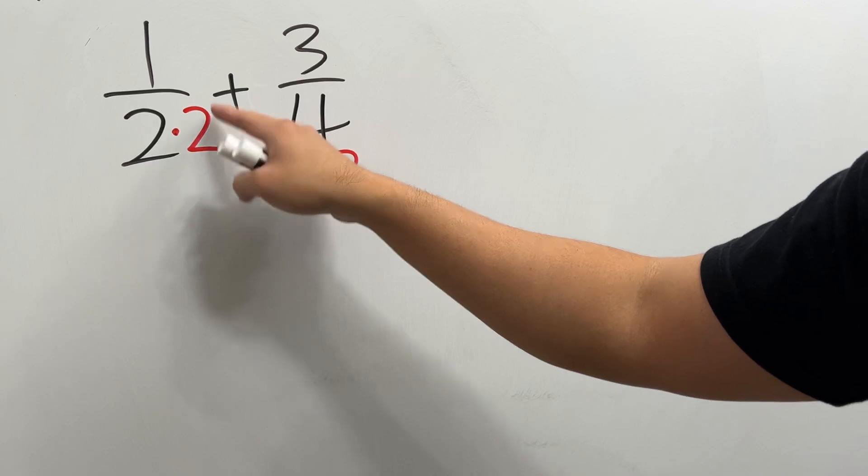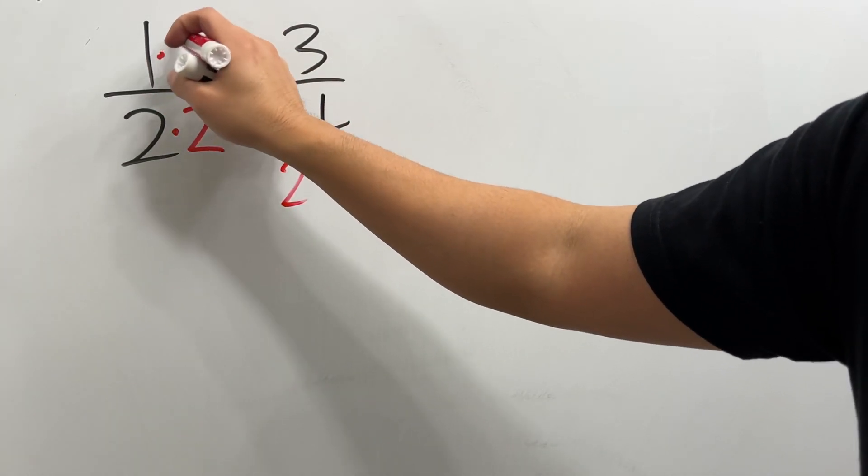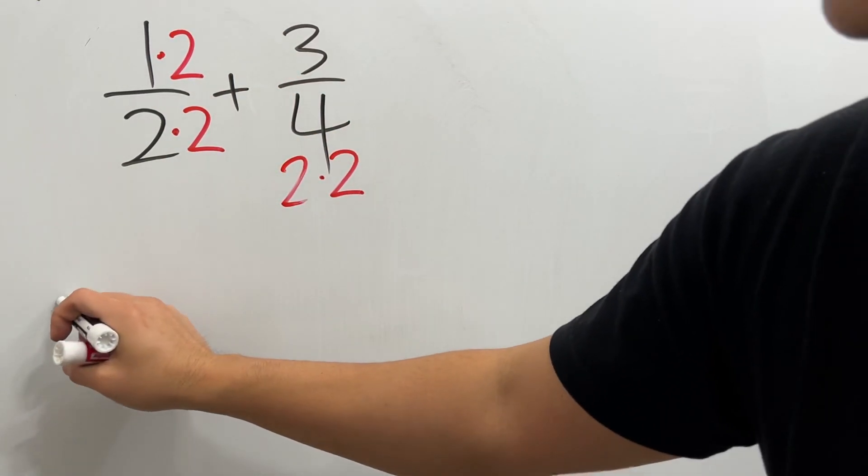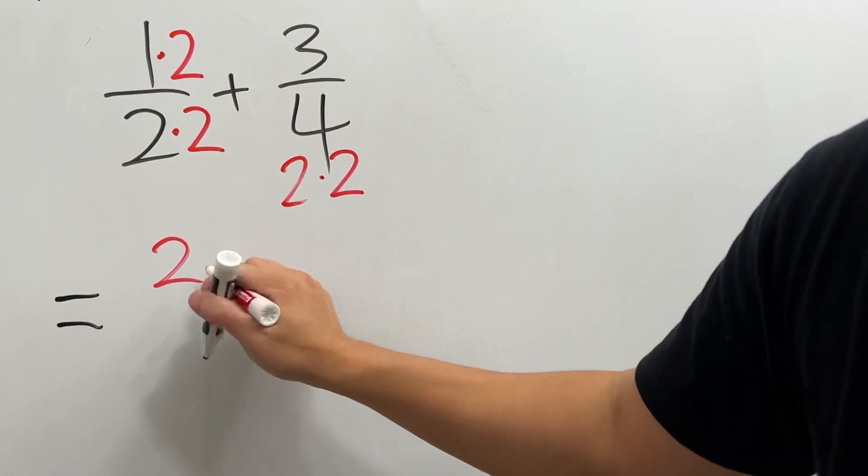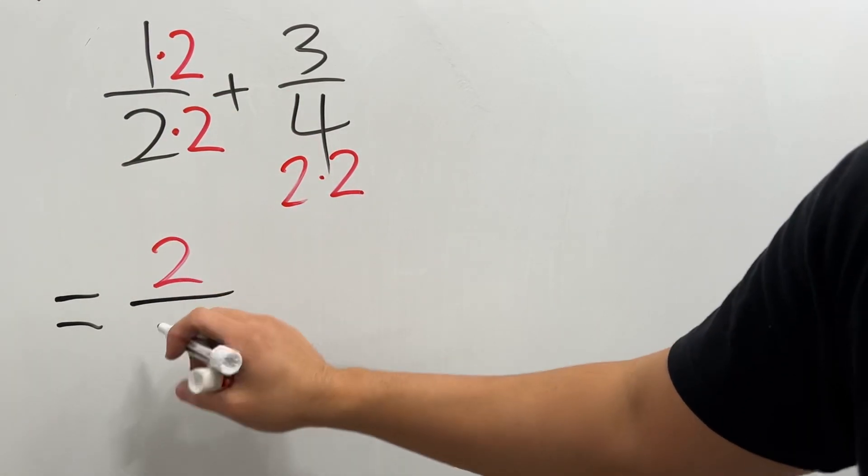Now, whatever you do on the bottom, you do the same on the top. So you multiply by 2 right here as well. This will give us 1 times 2, which is 2, over 2 times 2, which is 4.